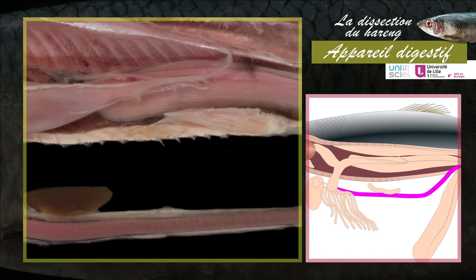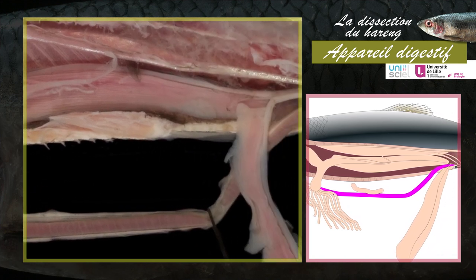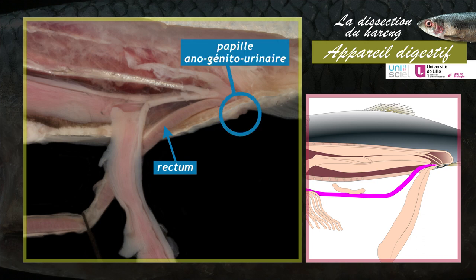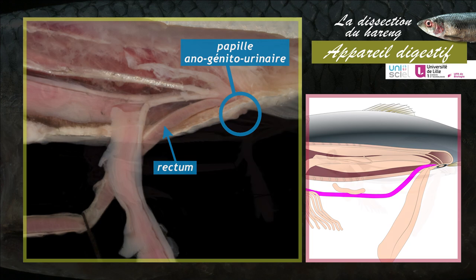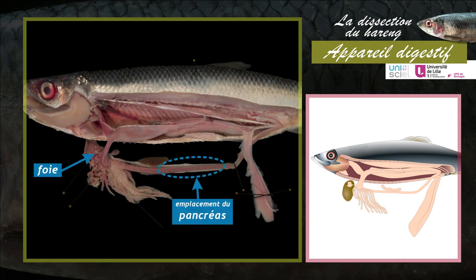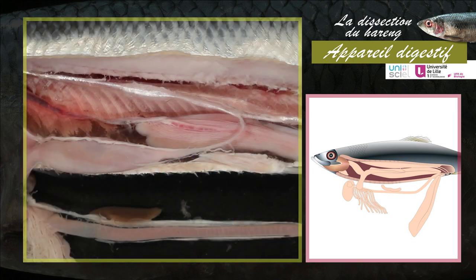Le tube digestif se poursuit par l'intestin qui longe le plan médioventral de l'animal. La partie terminale de l'intestin, le rectum, se termine avec l'anus au niveau de la papille anogénitourinaire. L'appareil digestif des téléostéens comprend aussi des glandes annexes, le foie et le pancréas. Le pancréas, difficile à isoler, est diffus dans le tissu adipeux qui entoure l'intestin. Dans la cavité abdominale, à côté de l'intestin, est présente la rate, un organe immunitaire qui ne fait pas partie de l'appareil digestif.